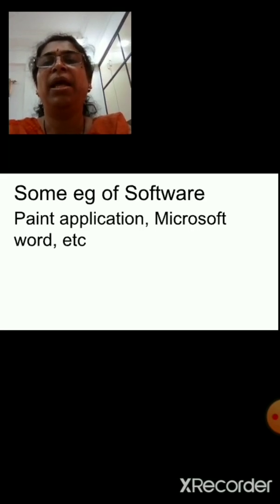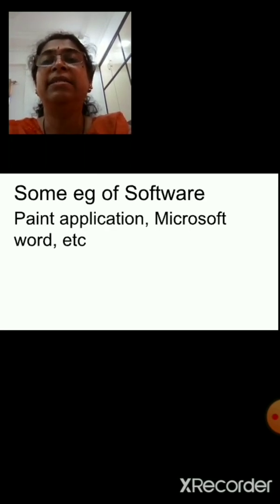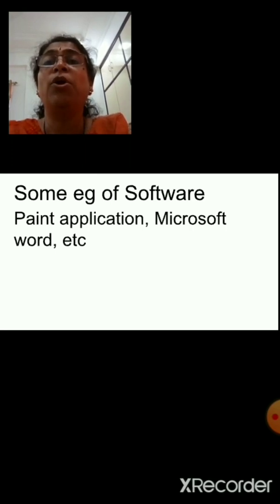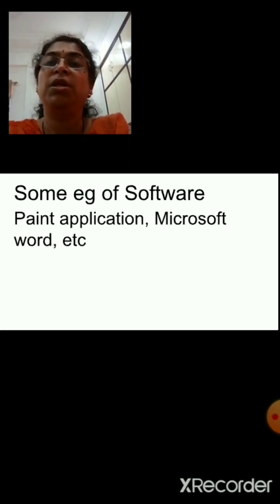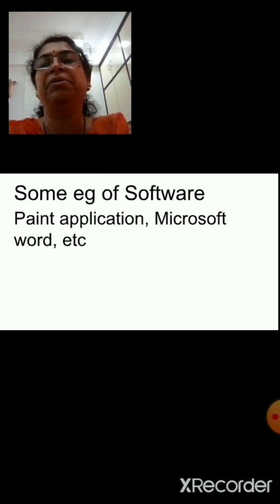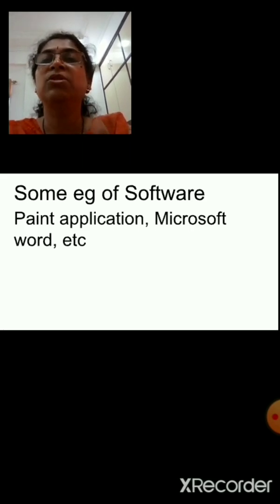For one more example — nowadays school-going children also have mobiles. That handset is the hardware, and the SIM inside the handset or the Android system on that mobile is the software. Suppose you are having a SIM but no handset to put the SIM in — it's of no use. Suppose you have a handset but no SIM inside it — you cannot use the mobile. Those things are interdependent, dependent on each other. Without one's presence, the other will not work. This is called interdependent.